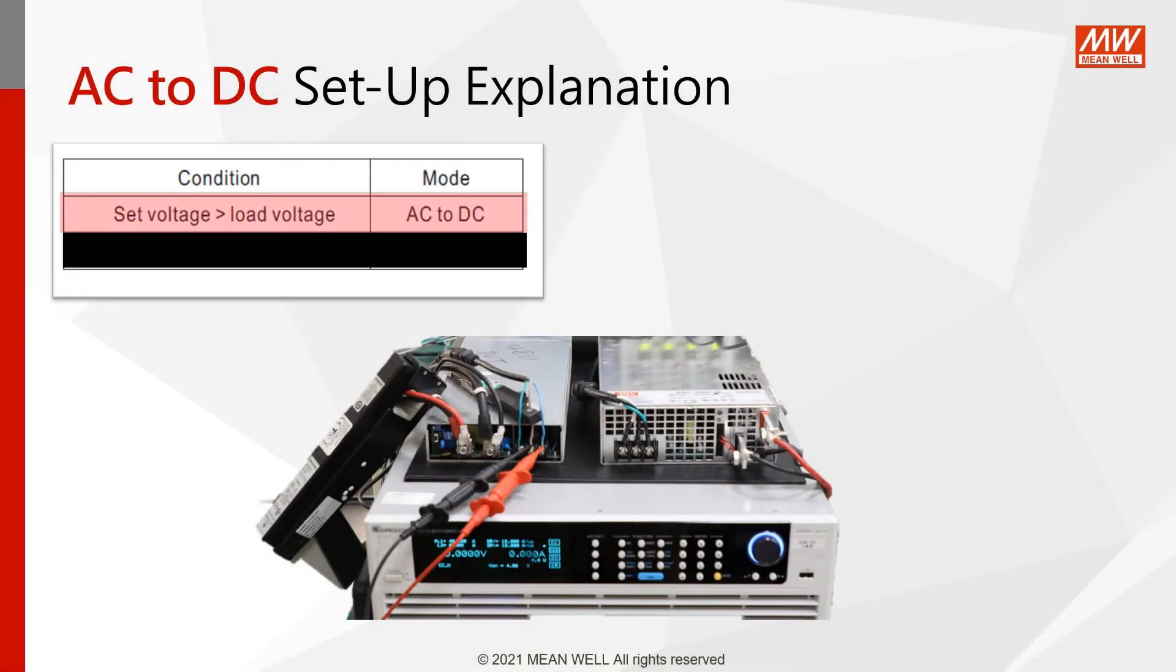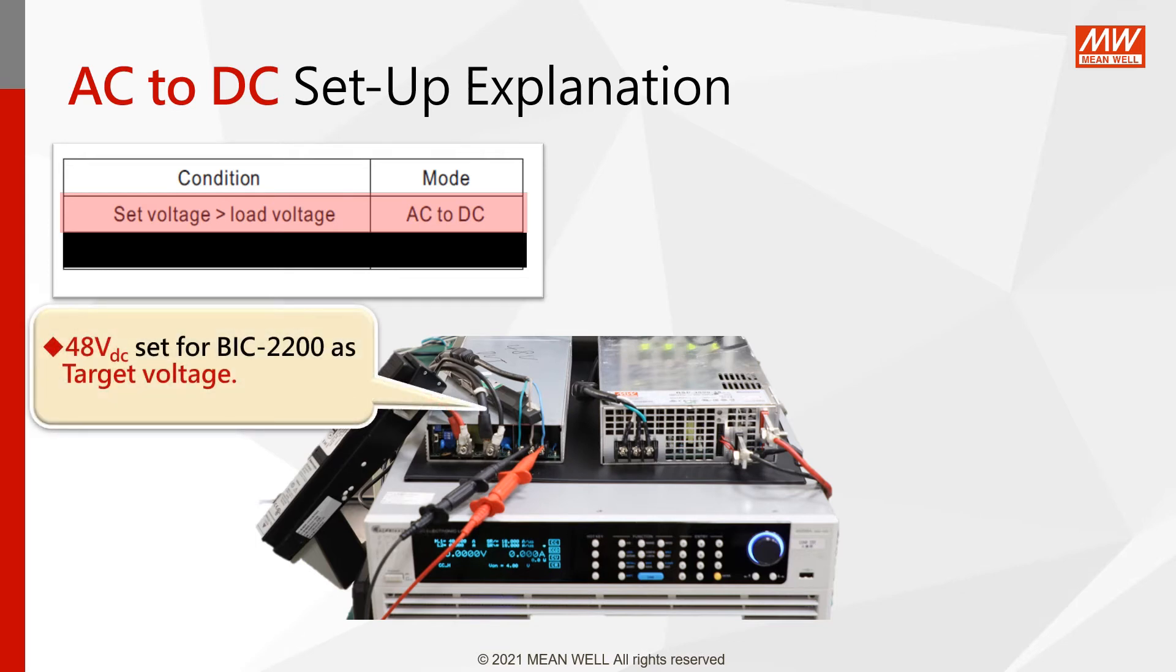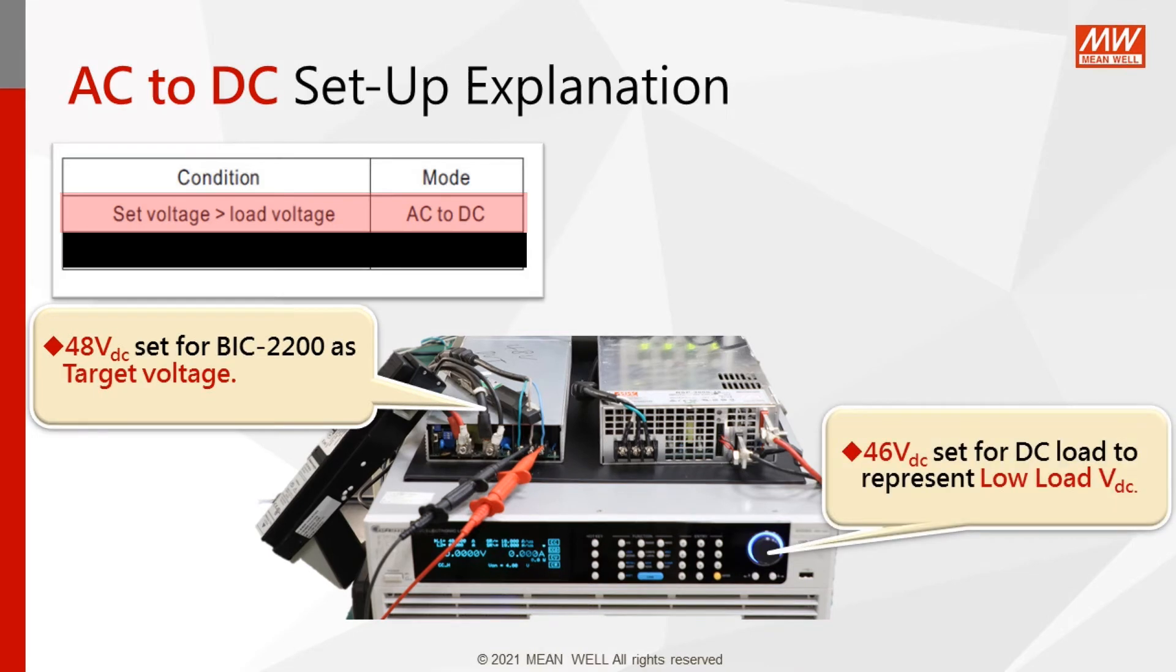Take BIC-2200, 48 volts as an example. Its default target voltage is 48 volts. When a battery with 46 volts or a DC electronic load set at CV mode and 46 volts is connected to the BIC, the BIC will convert AC to DC to charge the battery or feed DC energy to the electronic load as 46 volts is lower than the target voltage.